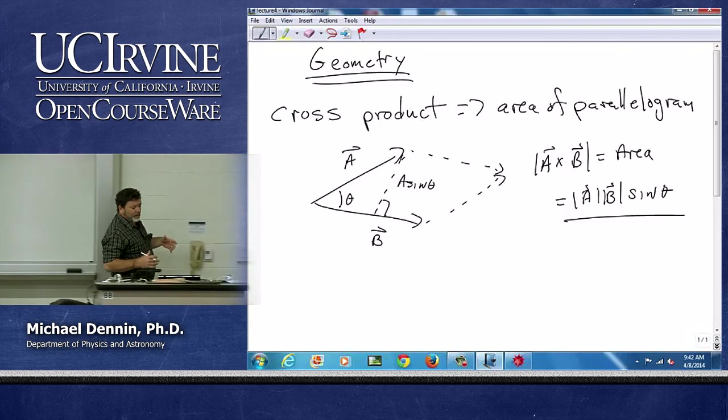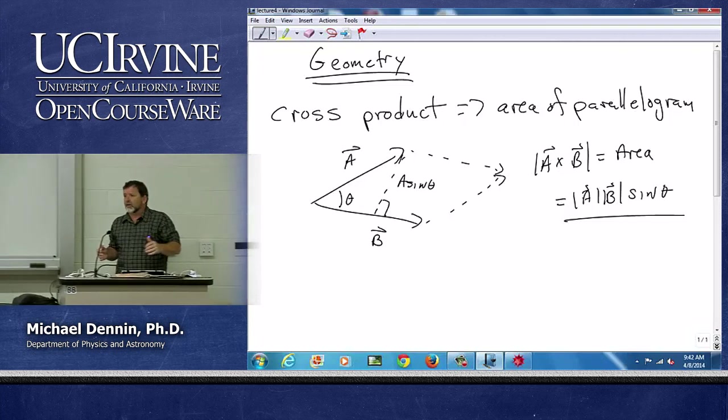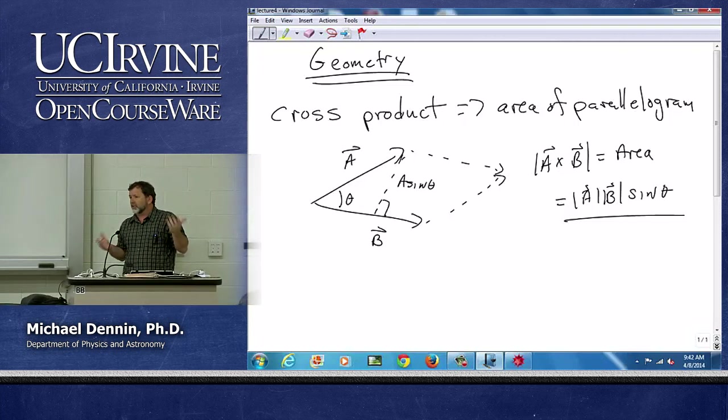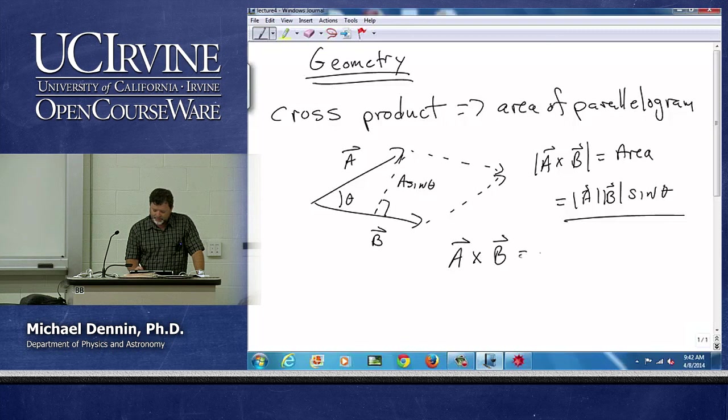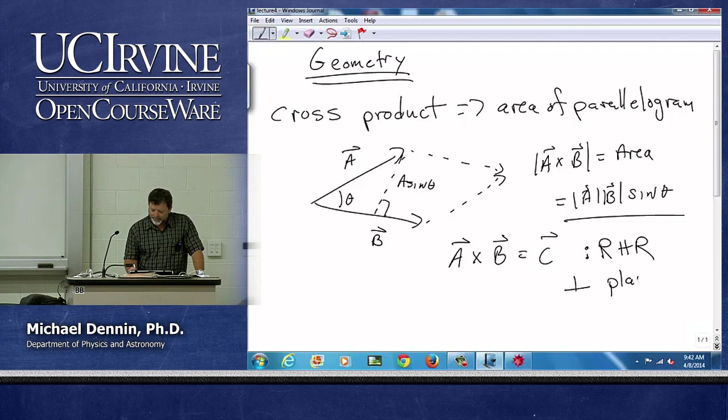And then the idea that it's also a vector perpendicular to this, again, that's another geometric thing. I can measure the normal to the plane. So the direction of a cross b equals c comes from the right-hand rule, and it's perpendicular to the plane formed by a and b.